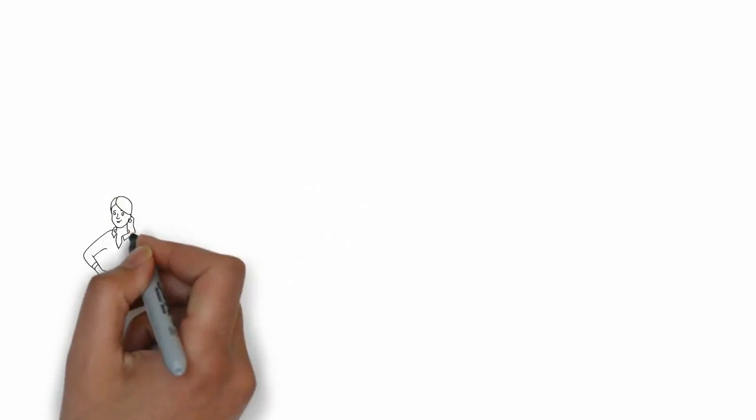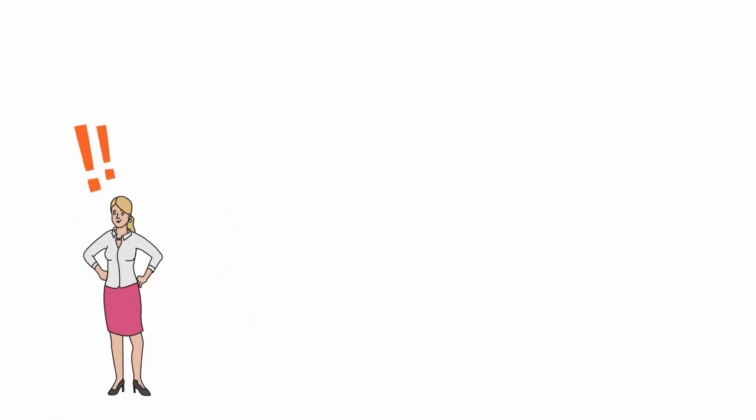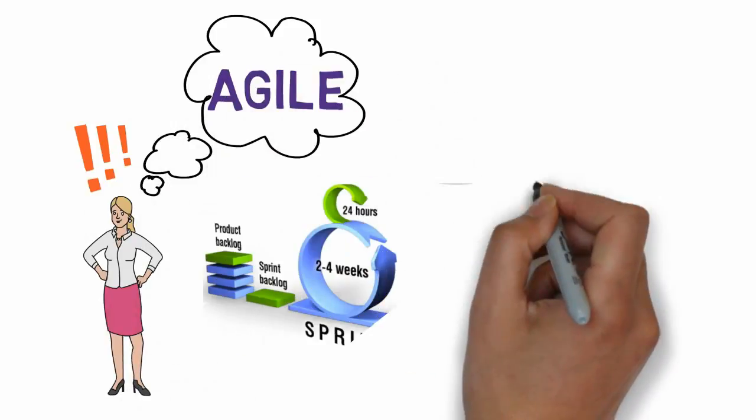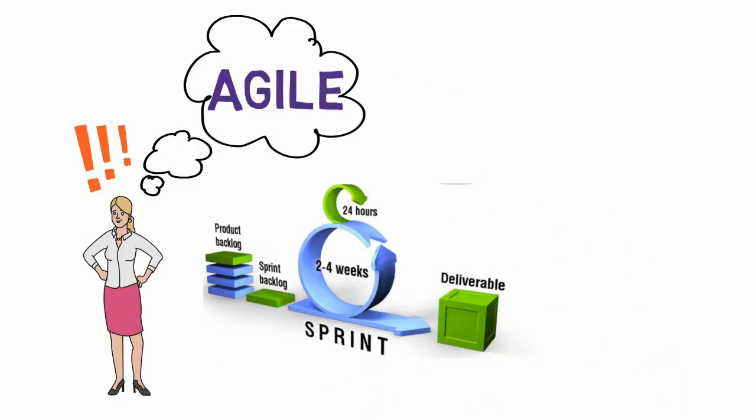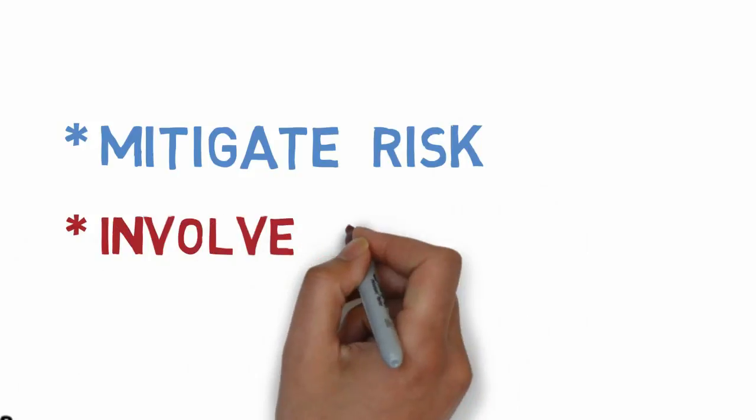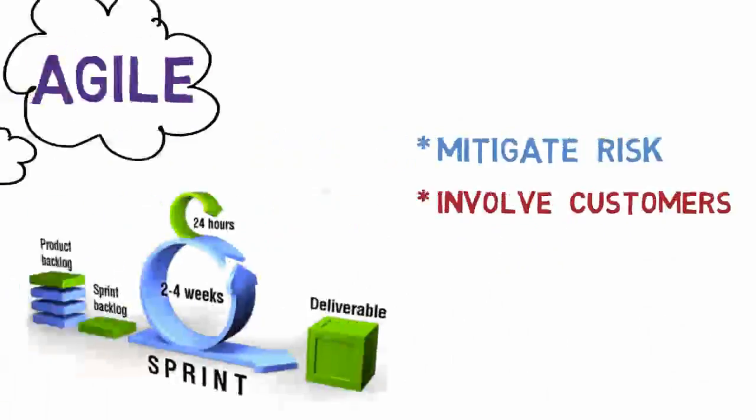Given this, she decides to manage the website's development using Agile. Agile is a development mindset focused on delivering customer value. This means that if you work in an Agile fashion, you mitigate risk by continually sharing your work with your customers in order to validate that what you are building is what they really want.